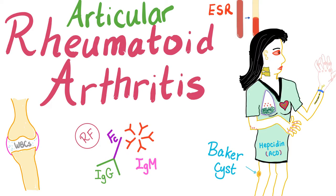Hey guys, it's Medicosis Perfectionelis, where medicine makes perfect sense. We continue on our series called Rheumatology. In the previous video, we talked about the pathophysiology of rheumatoid arthritis. Today, let's talk about the articular manifestations of this arthritis.